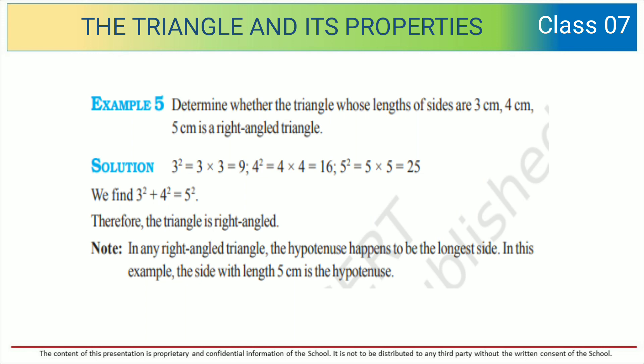Therefore, the triangle is right-angled. In any right-angled triangle, the hypotenuse happens to be the longest side. In this example, the side with length 5 cm is the hypotenuse.